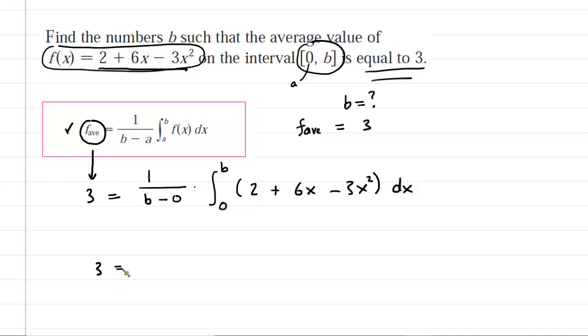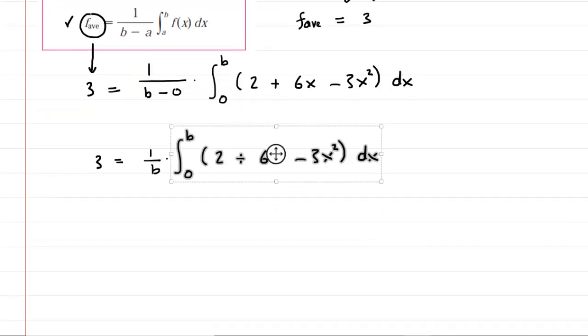Now, we can clean this up a tad because b minus 0 is just b. So we'll say 1 over b, and then that's going to be multiplied by the integral. Now, we could perhaps go ahead and begin to perform the integral, but it might also be easier to just get this 1 over b canceled out. So why don't we go ahead and just multiply both sides of the equation by b. And that'll be nice because that'll cancel those b's right there. The left side will become 3b.